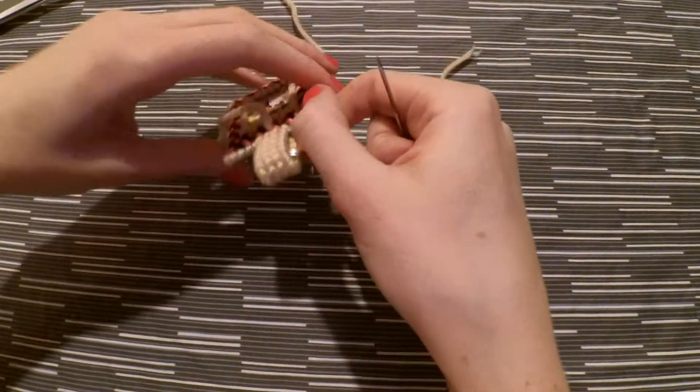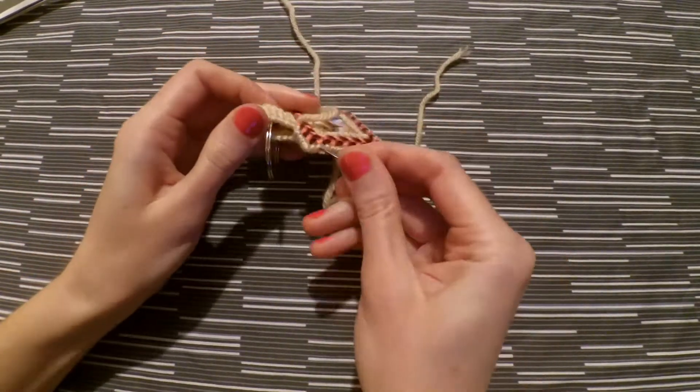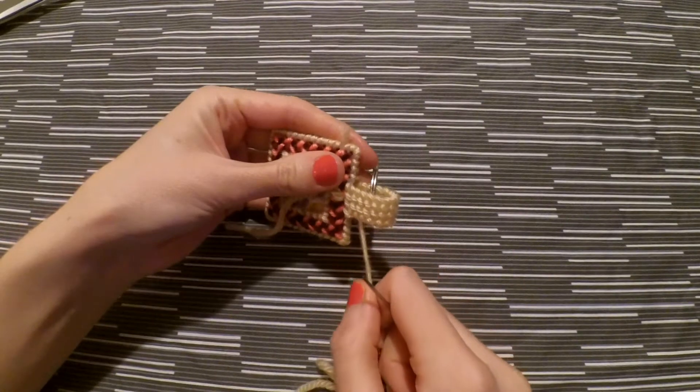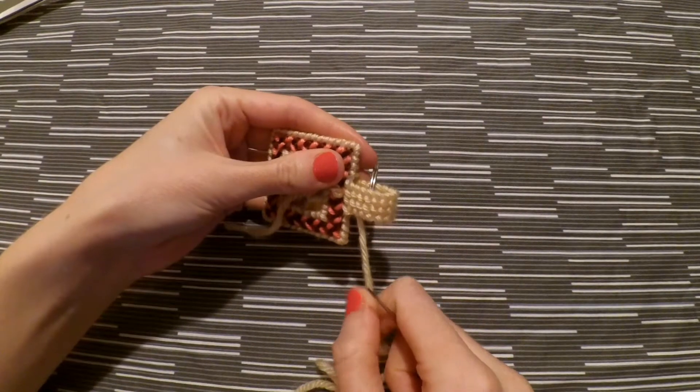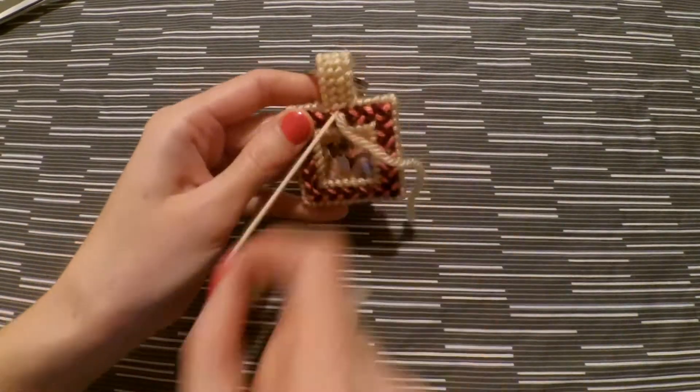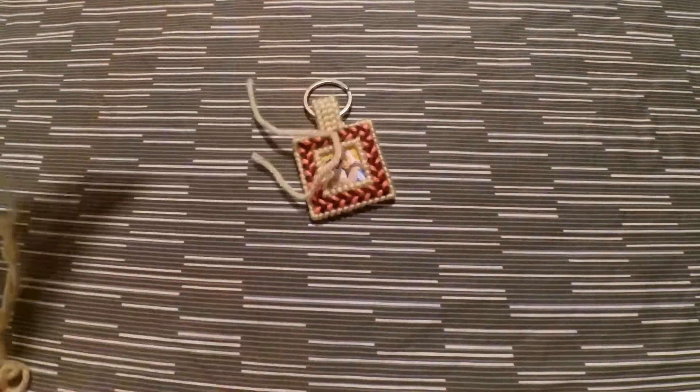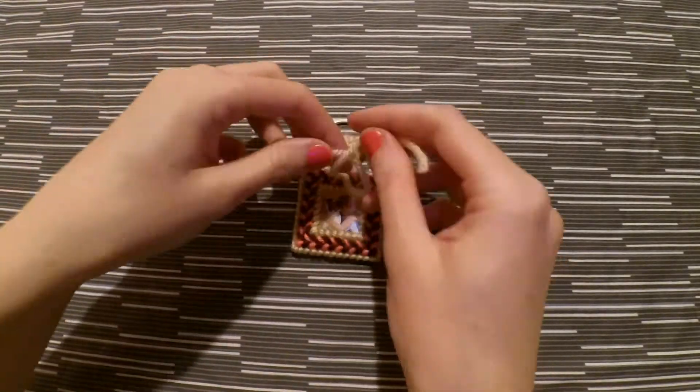Next you're going to need another strand of yarn so just stick it through the side and make sure that you're tacking it down under a few stitches of yarn. And then bring it out through the side of the loophole at the top. And then back through the same hole that you brought your first strand of yarn out through. And you're going to use this to tie a bow.